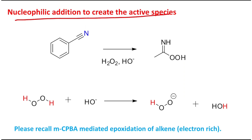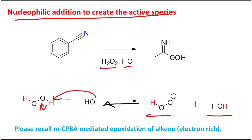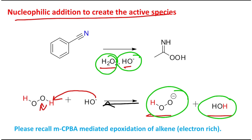Let's understand what is actually happening. The first step is a nucleophilic addition to create an active species. In the reaction medium, hydrogen peroxide and alkali are provided. This alkali can abstract a proton and produce the hydroperoxide anion and water, but it is actually an equilibration reaction. So in the reaction medium, the species present are: hydrogen peroxide, alkali, hydroperoxide ion, and water.